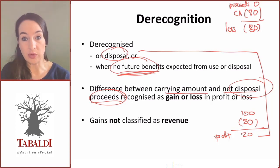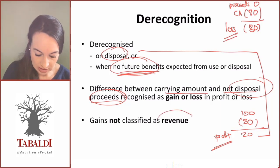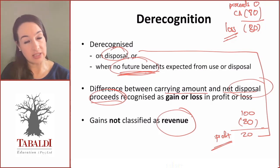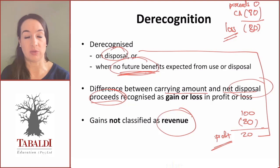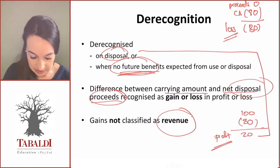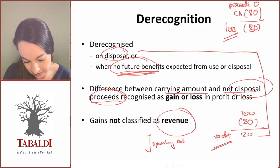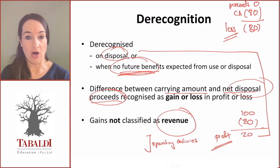Very importantly, this profit or loss is not presented as part of revenue in your income statement. It will not sit in that top line either as revenue or revenue from contracts with customers. It needs to be sitting in your operating activities as a gain or loss on sale or on de-recognition of that asset.